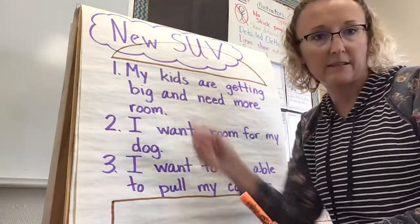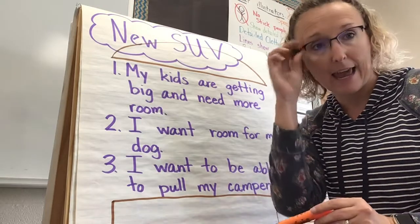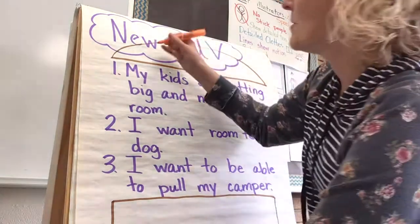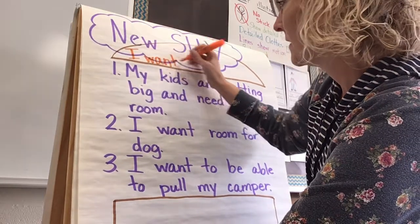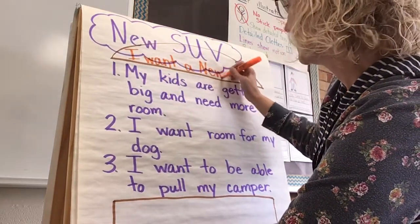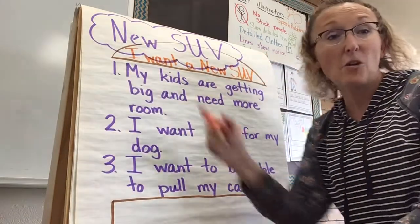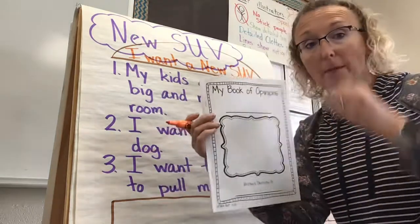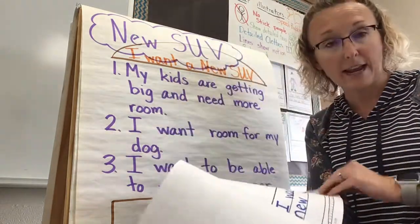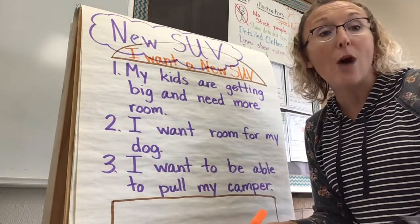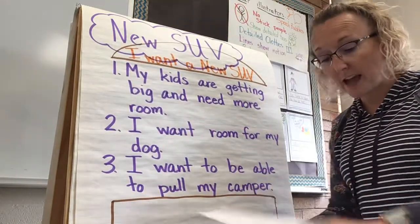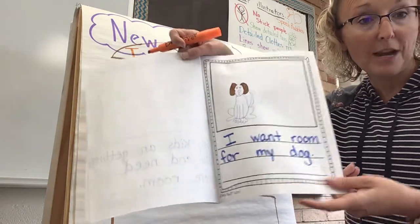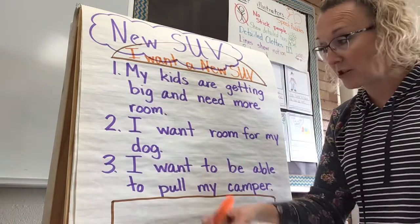I'm going to write that up here at the top. I drew this little weird-looking shape because it's supposed to be a hamburger bun — you're going to see why. So up here I'll write 'I want a new SUV.' That is my topic sentence or lead that went on the first page. Then my next page shows one of the reasons: 'my kids are getting big and I need more room.' The next page says another reason: 'I want room for my dog.' And the third page shows my third reason: 'I want to be able to pull my camper.'